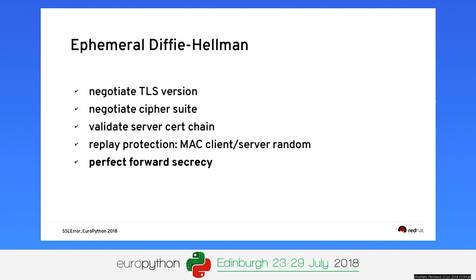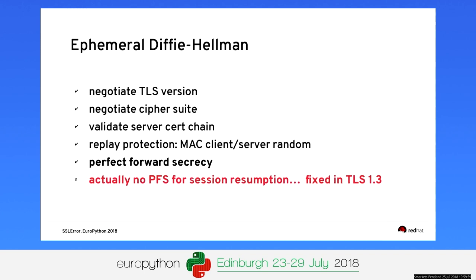That's why we now use the Diffie-Hellman key exchange. The server sends parameters and its public key, signed with the private key from the certificate chain. The client verifies this signature with the public key, then generates its own Diffie-Hellman private/public key pair and sends the public key back. Both have then agreed on a shared secret — that's ephemeral Diffie-Hellman key exchange with perfect forward secrecy. Since they throw away the keys after each handshake, an attacker can't retroactively decrypt traffic. Although in TLS 1.2 it's not fully secure due to session resumption — that's fixed in TLS 1.3.